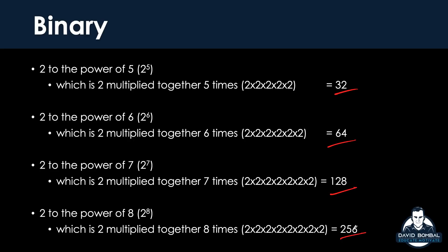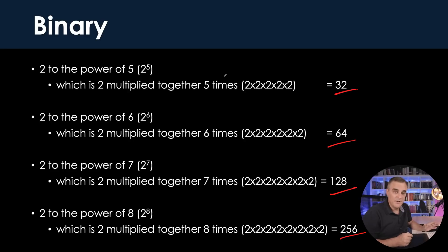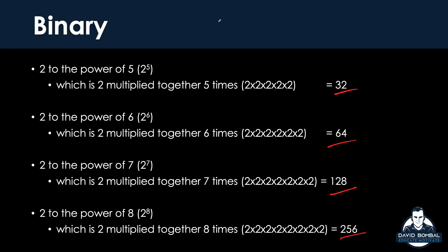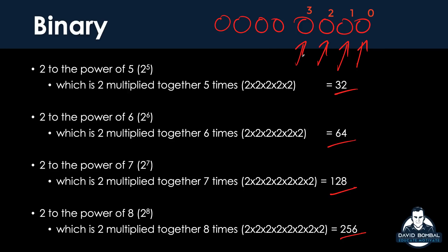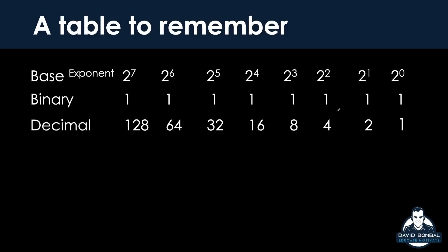Two to the power of six is 64. Two to the power of seven is 128. Two to the power of eight is 256. In an IPv4 address we have what's called an octet, which is eight binary values. So we have eight values but we start counting at zero: zero, one, two, three, four, five, six, seven.